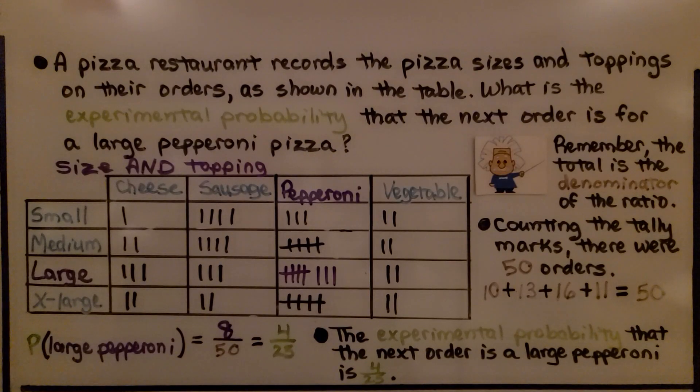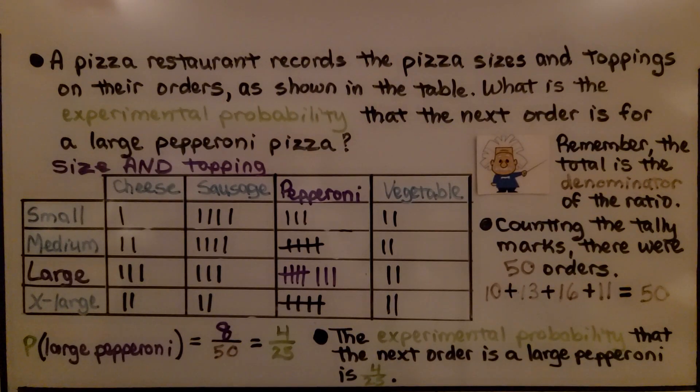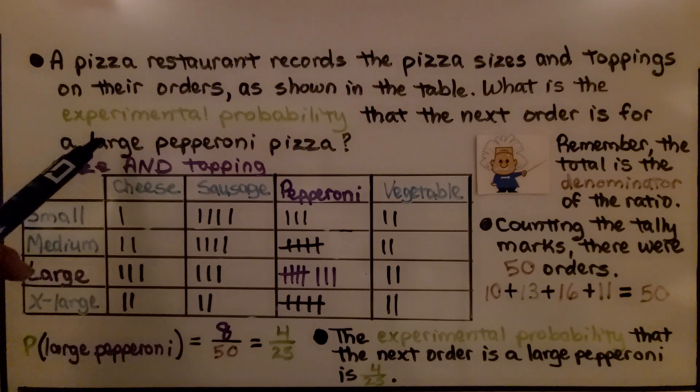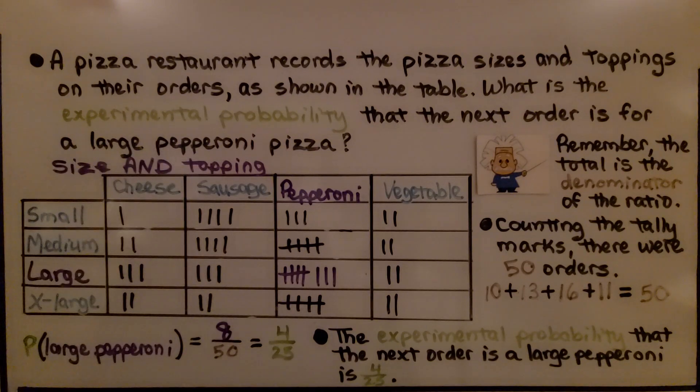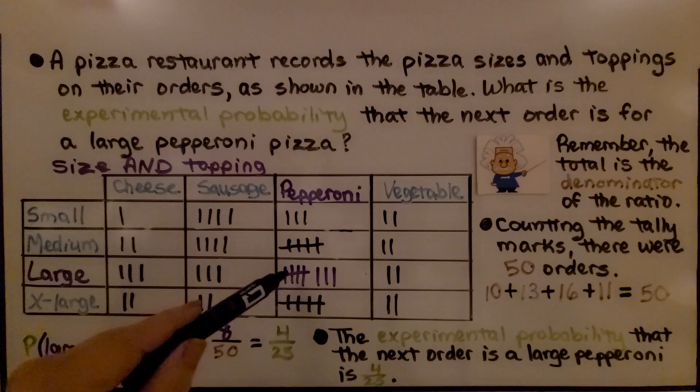A pizza restaurant records the pizza sizes and toppings on their orders, as shown in the table. What is the experimental probability that the next order is for a large pepperoni pizza? So the compound event is large for the size and pepperoni for the topping. And we can see where large and pepperoni meet. It's eight.